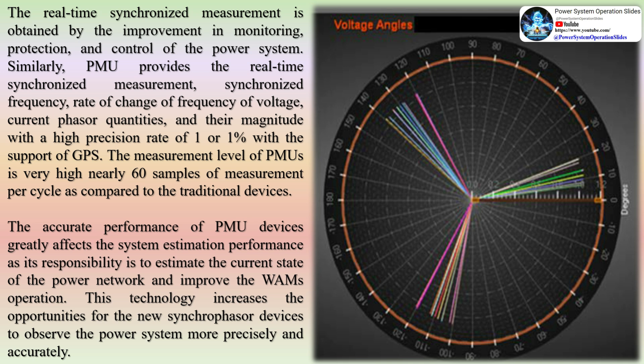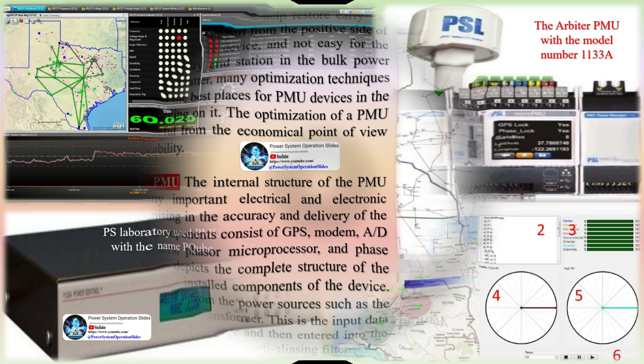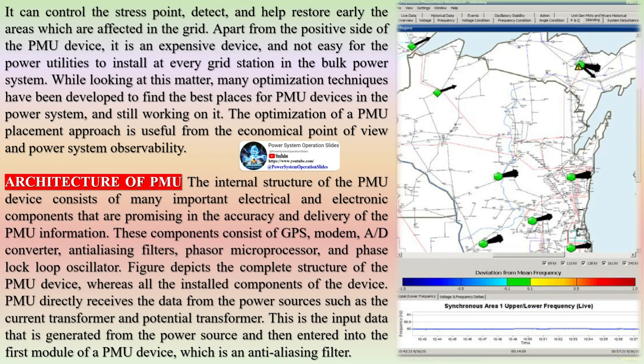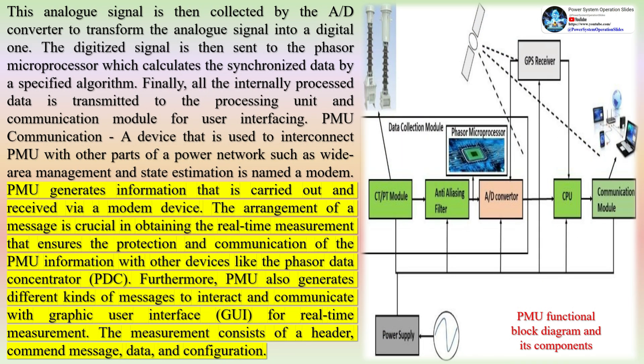The phasors measured at the same instant provide snapshots of the status of the monitored nodes. By comparing the snapshots with each other, not only the steady state but also the dynamic state of critical nodes in transmission and sub-transmission networks can be observed. Thereby, a dynamic monitoring of critical nodes in power systems is achieved. This early warning system contributes to increasing system reliability by avoiding the spreading of large area disturbances and optimizing the use of assets.